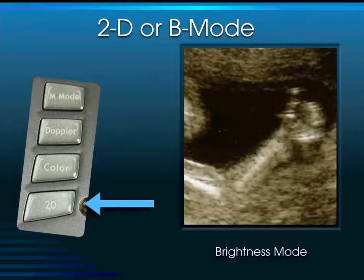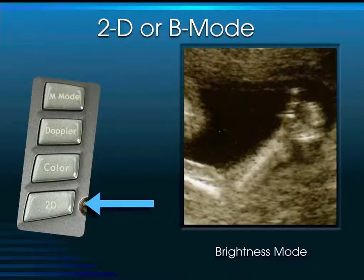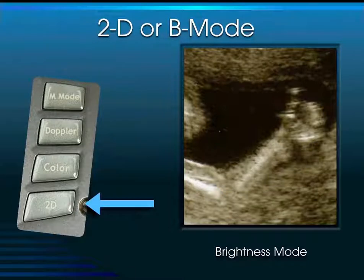The 2D or B-mode stands for Brightness mode — this is simply white dots on a black background. This is the reset button on most ultrasound devices that takes off any of the changes you may have made, such as instrumentation or calipers. The Brightness mode resets it back to its native state.